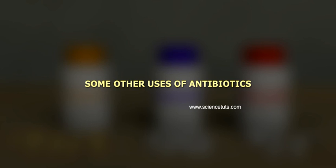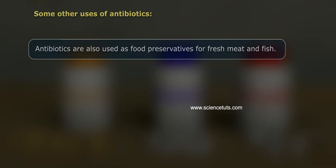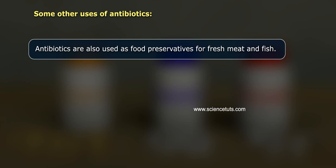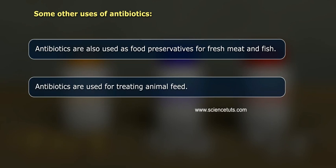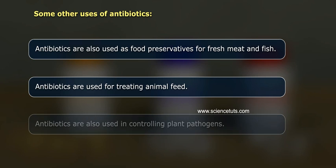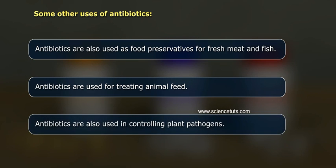Some other uses of antibiotics: Antibiotics are also used as food preservatives for fresh meat and fish. Antibiotics are used for treating animal feed. Antibiotics are also used in controlling plant pathogens.